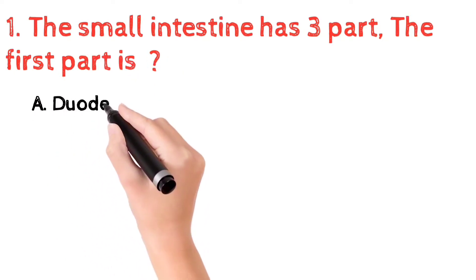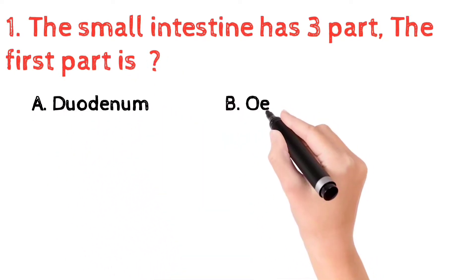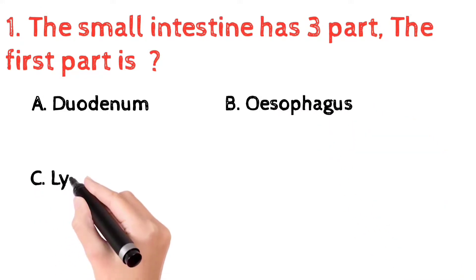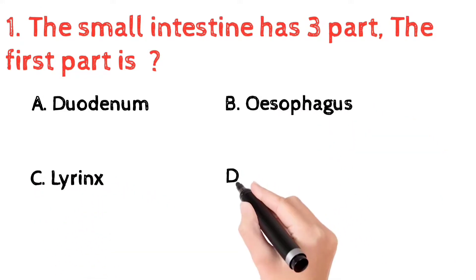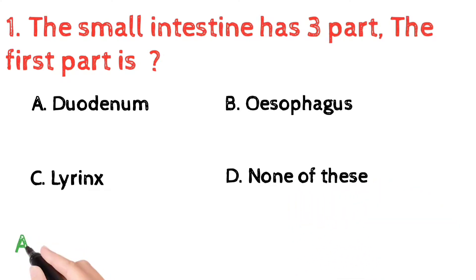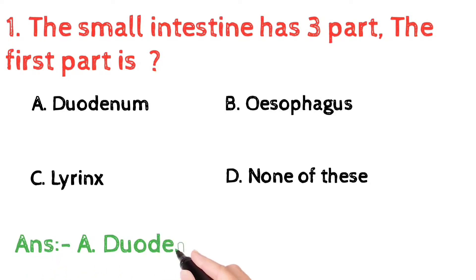Question number one: the small intestine has three parts. The first part is — a) duodenum, b) oesophagus, c) larynx, d) none of the above. The correct answer is duodenum. The small intestine has three parts: duodenum, jejunum, and ileum. Duodenum is the first part of the small intestine.